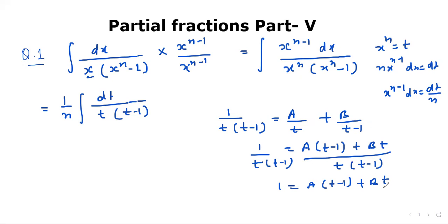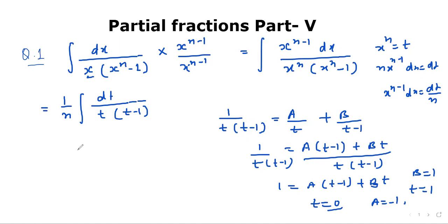Now we can choose the values of t. When t equals 0, then a equals minus 1. And when t equals 1, then b equals 1. So we have got values of a as minus 1 and b as 1.